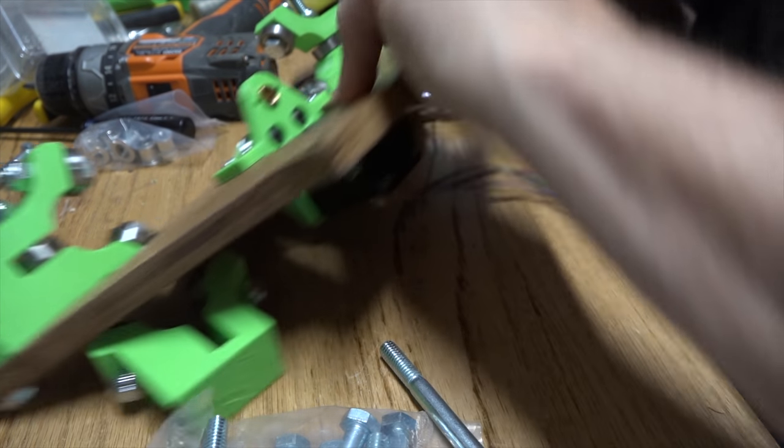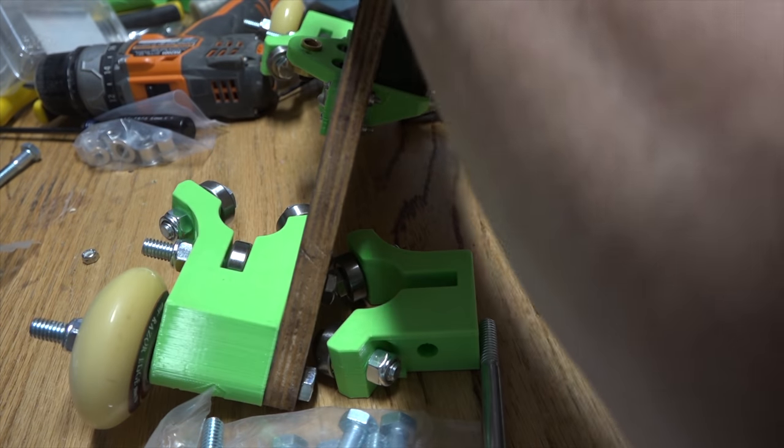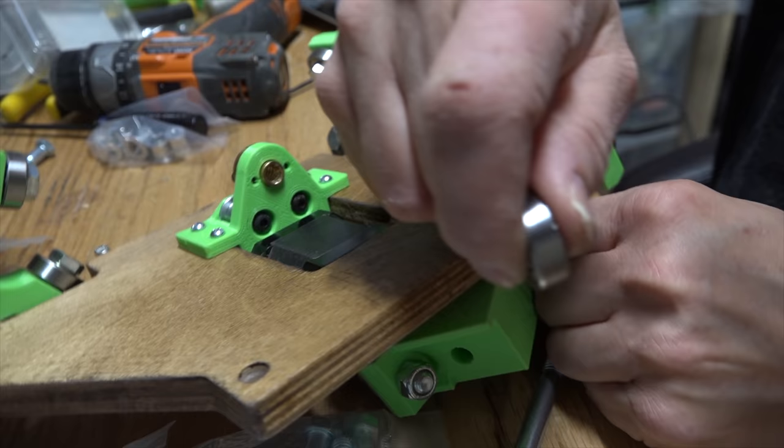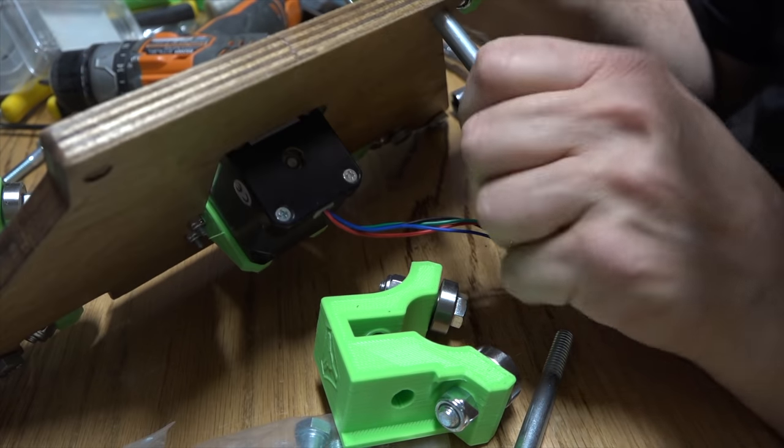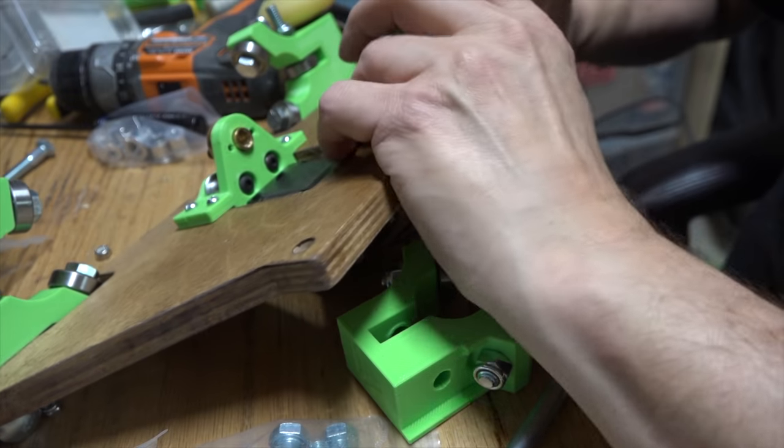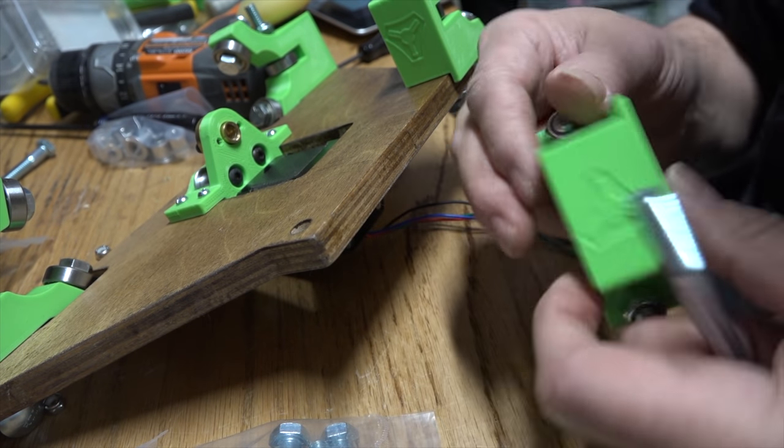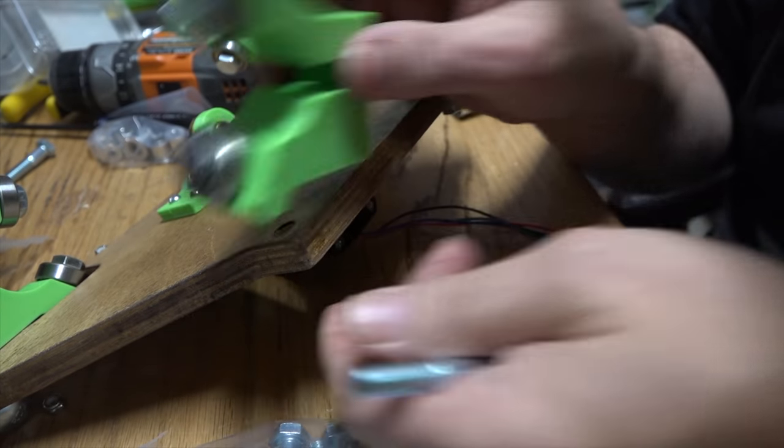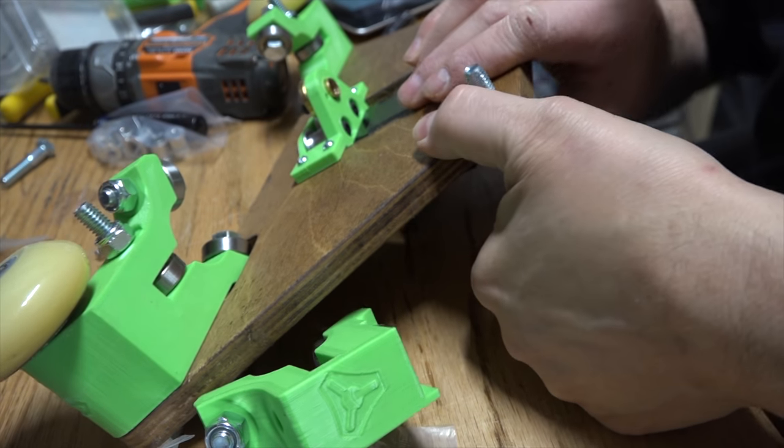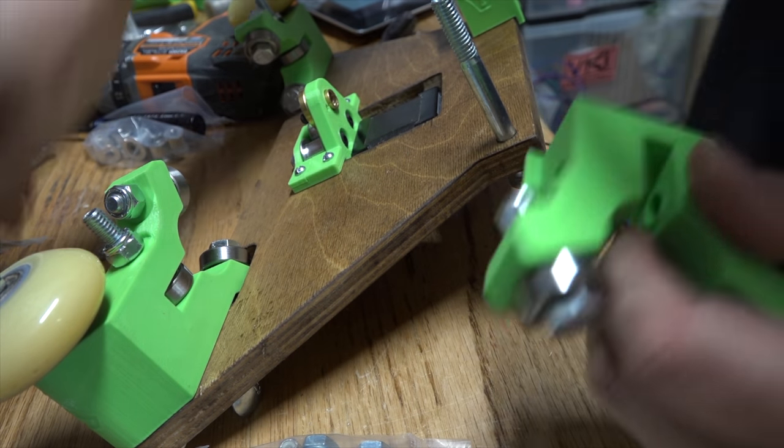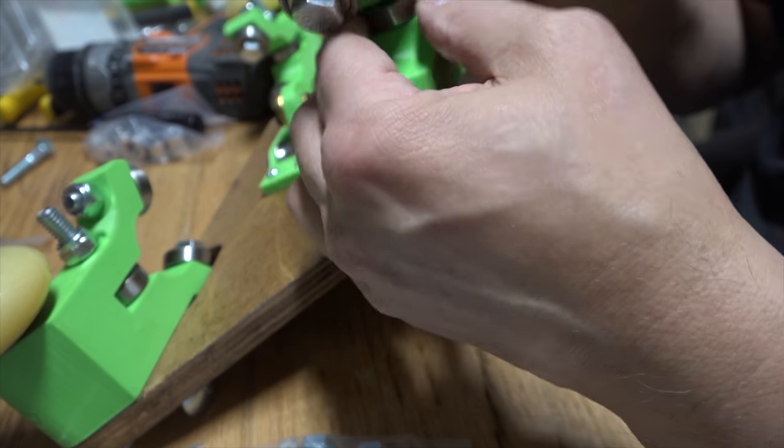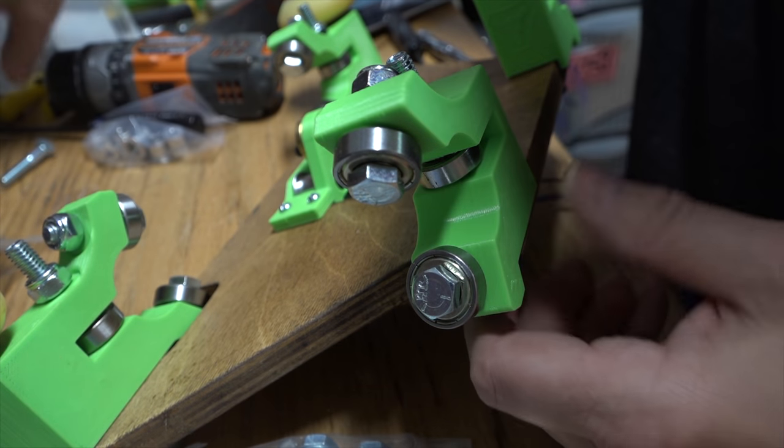And we'll do the same thing for the other side. These lips hold on to the board here so it won't turn. Yep, that looks correct. We'll put that through there. Grab another bearing. That will go like that. And slip the bearing in. Perfect. And a couple of more nuts.